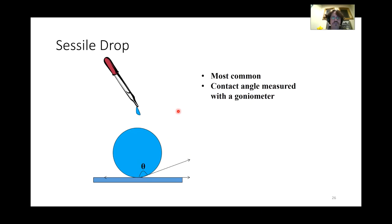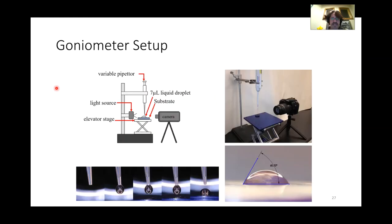The sessile drop method is the most common. It measures wettability with a goniometer and is essentially what I used with water and wax paper in the kitchen experiment. A simple setup involves a camera positioned in front of the substrate — you keep it level to measure the contact angle accurately. You can buy very nice goniometers, or simply set up a camera on a scissor-jack stand.